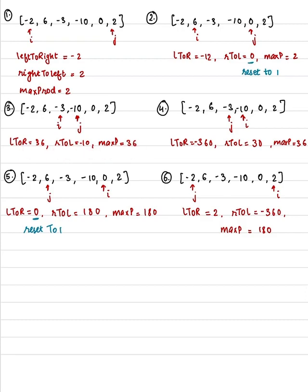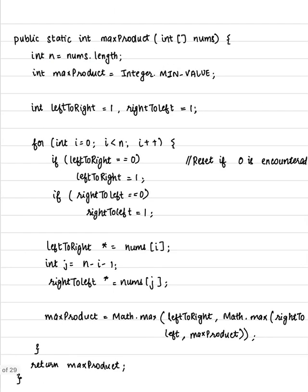So the code for it will look something like this: initially left to right is 1, right to left is 1, and maximum product is what we have to keep track of. And we have to traverse the array.